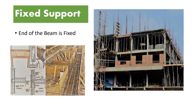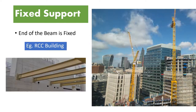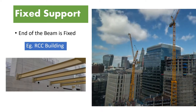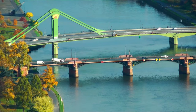Next is fixed support. In this, the end of the support is fixed so it can neither move in any direction nor be rotated. If we provide a fixed support, the structure is in a stable condition. The best example for fixed support is almost all types of RCC buildings.